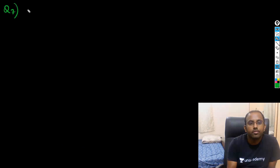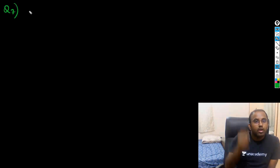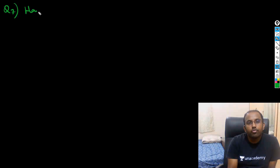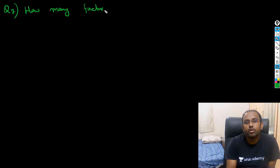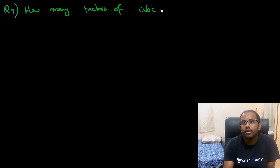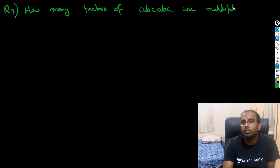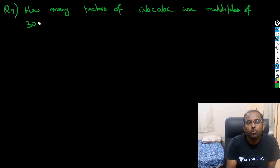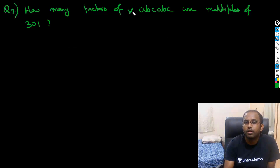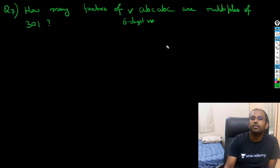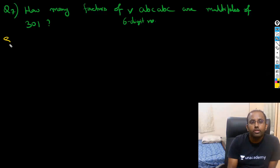Question seven: how many factors of the six-digit number abcabc are multiples of 301? Let's solve this question.